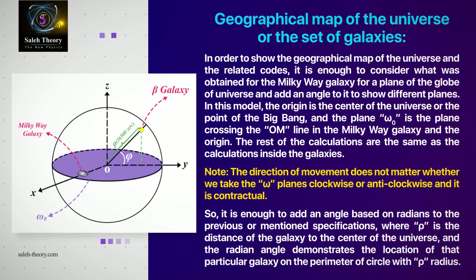Note: the direction of movement does not matter whether we take the omega planes clockwise or anti-clockwise, and it is contractual. So it is enough to add an angle based on radians to the previous or mentioned specifications, where rho is the distance of the galaxy to the center of the universe, and the radian angle demonstrates the location of that particular galaxy on the perimeter of circle with rho radius.